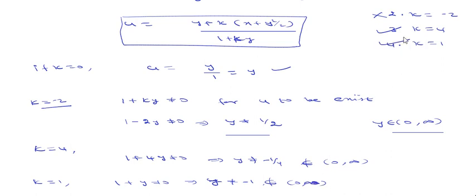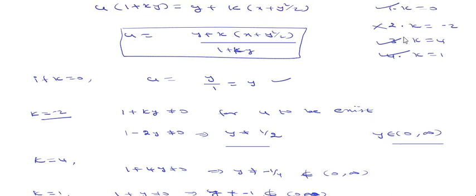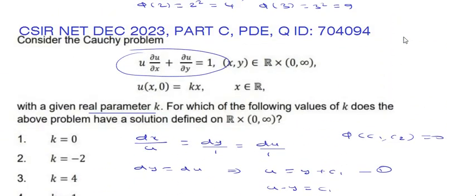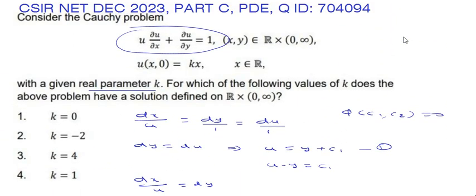Therefore, the correct options for this problem are: option 1 (k = 0), option 3 (k = 4), and option 4 (k = 1). If you liked this video, kindly like and share with your friends, also subscribe to our channel. Thank you.